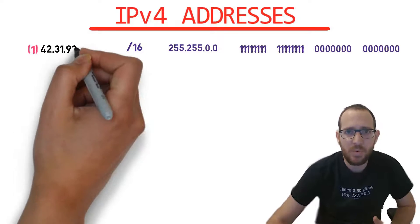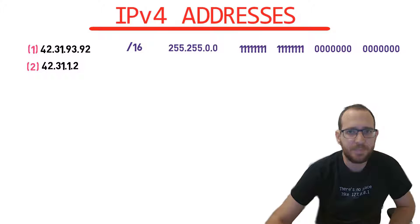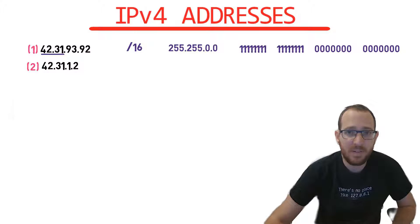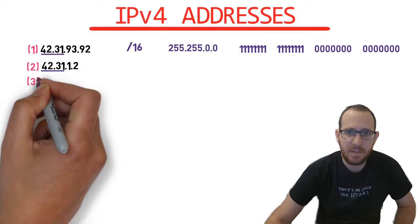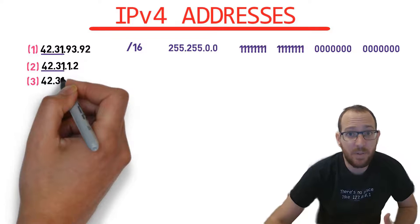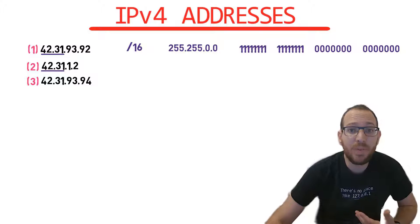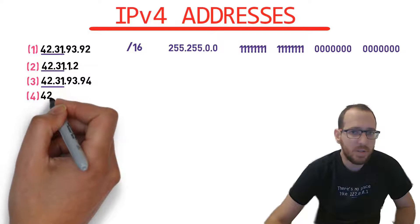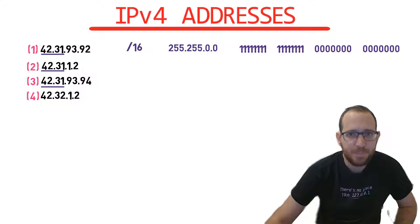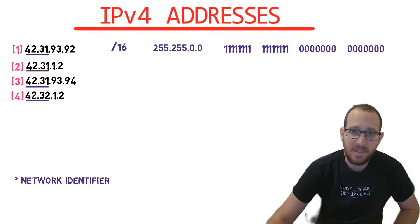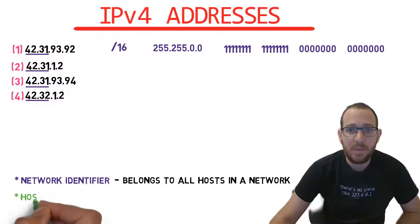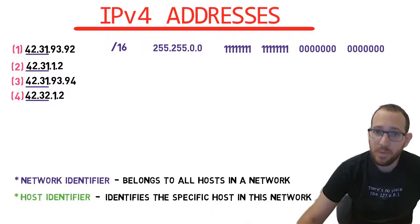Given this network prefix, do these addresses belong to the same network? Yes, they do, as they share the same most significant 16 bits, or two bytes. Does this third address belong to the same network as addresses 1 and 2? Yes, it does — it shares the same two most significant bytes. What about address 4? No, as the first two bytes are not 42.31; this is an address from a different network. So address 4 describes a host within network 42.32.